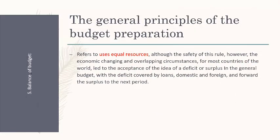Number five is the balance of the budget, which means uses must equal resources. However, in real life this is often not the case — either we have a deficit or a surplus. A deficit will be covered through loans, whether domestic or foreign. A surplus is carried forward to the next year, and deficits must be addressed during the current year and paid in subsequent years.